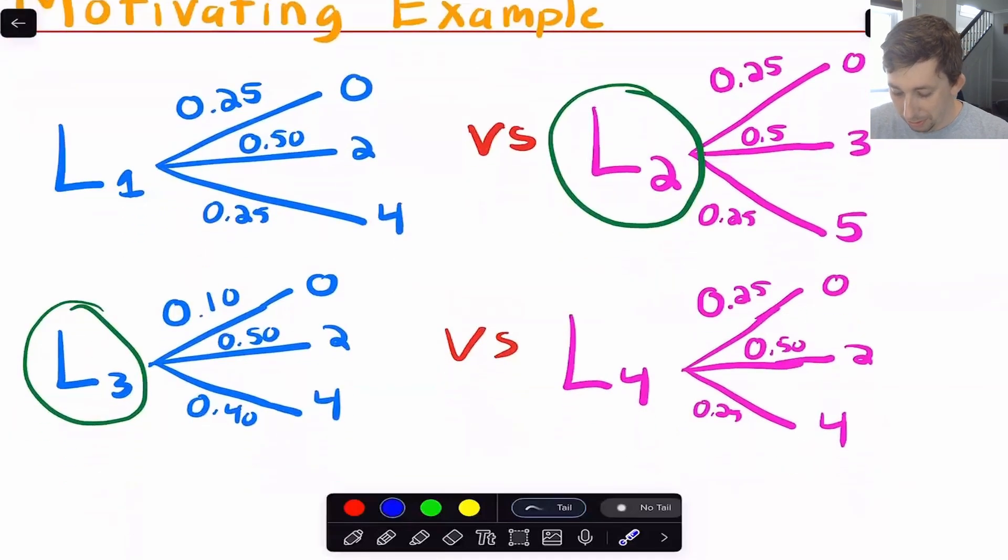Now, in the second pair of lotteries, Lottery 3 versus Lottery 4, notice that you've got a 10% chance of 0, a 50% chance of 2, and a 40% chance of 4. Lottery 4, you've got a 25% chance of 0, a 50% chance of 2, and a 25% chance of 4.